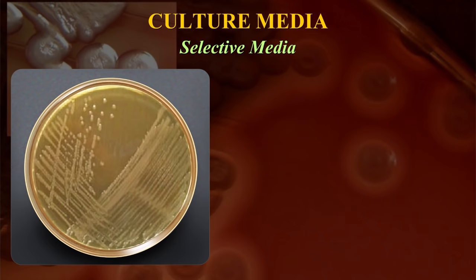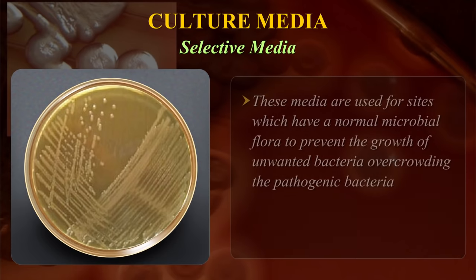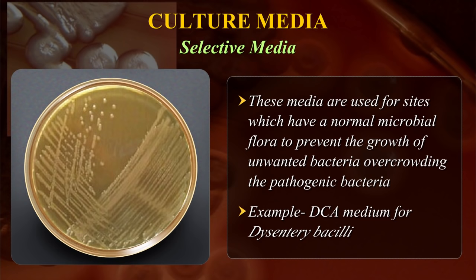Selective media have certain inhibitory substances added to them which inhibit the growth of unwanted bacteria and only promote the growth of pathogenic or disease-causing bacteria. These media are used for sites which have a normal microbial flora to prevent the growth of unwanted bacteria overcrowding the pathogenic bacteria. An example is DCA medium for dysentery bacilli.